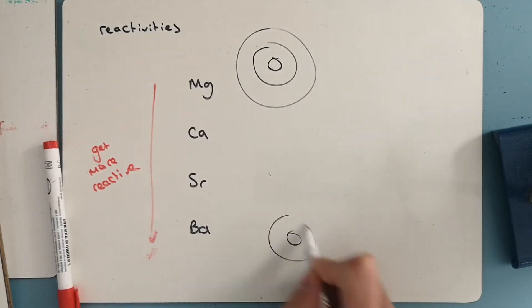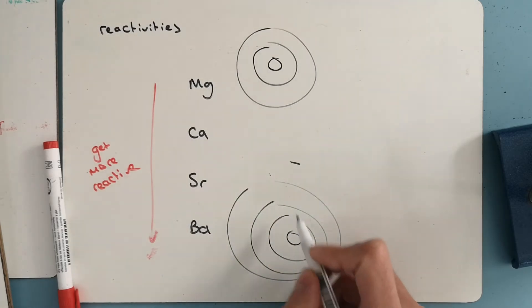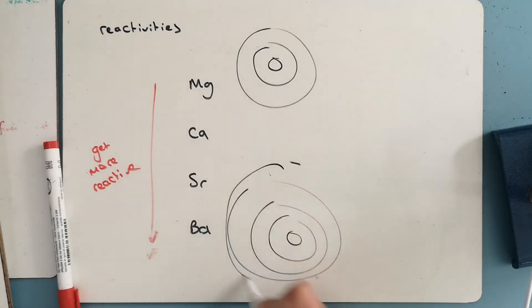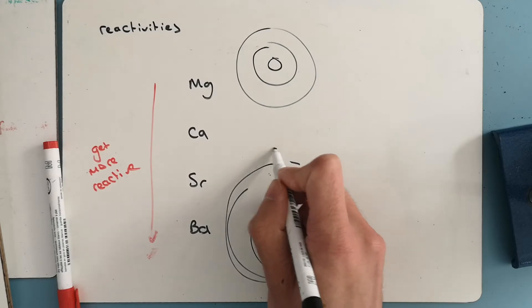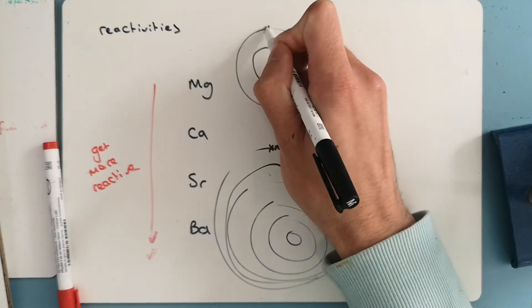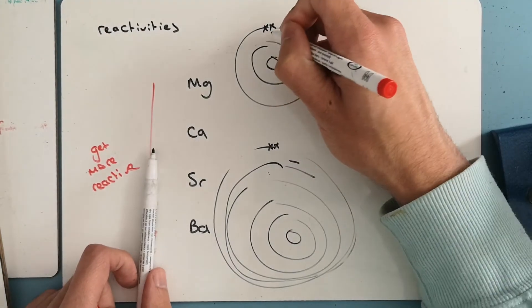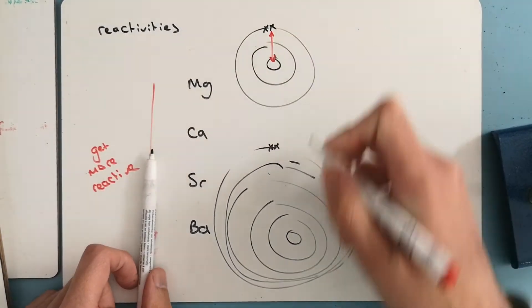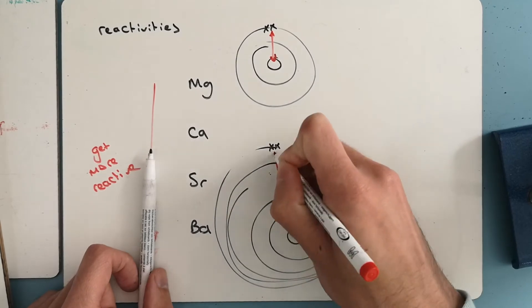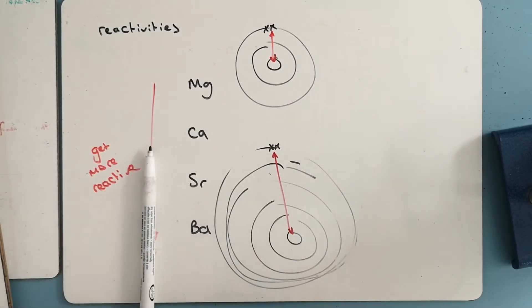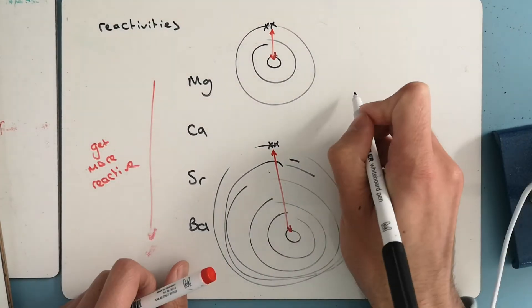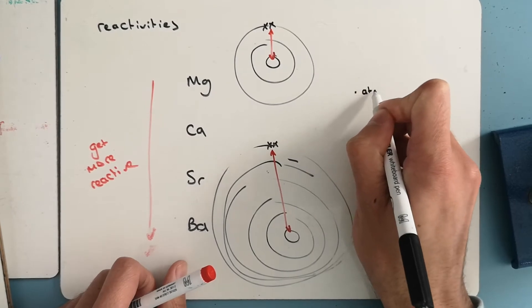Bohr's model here isn't strictly right, but it'll help me demonstrate my point here. So I need another ring. So, two outer electrons on each of these, the first thing we can see in magnesium is the electrons are a lot closer.